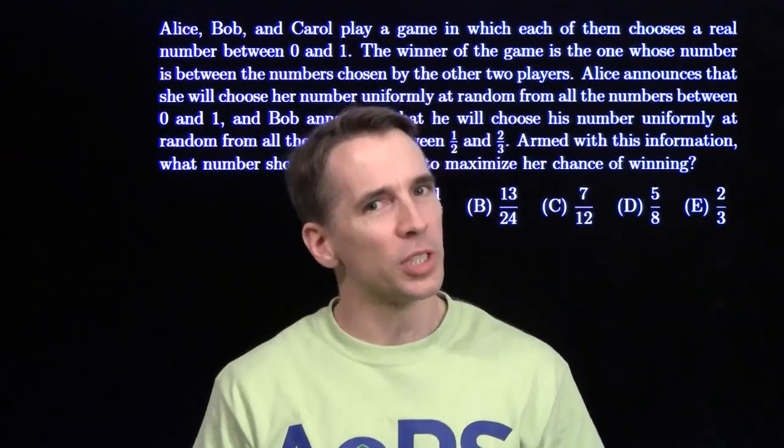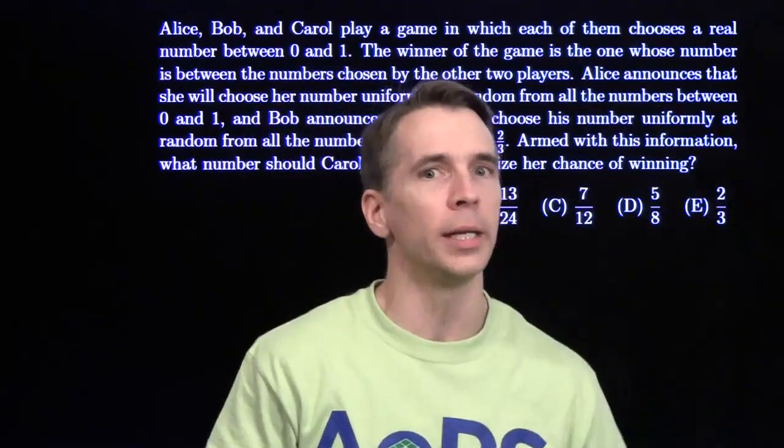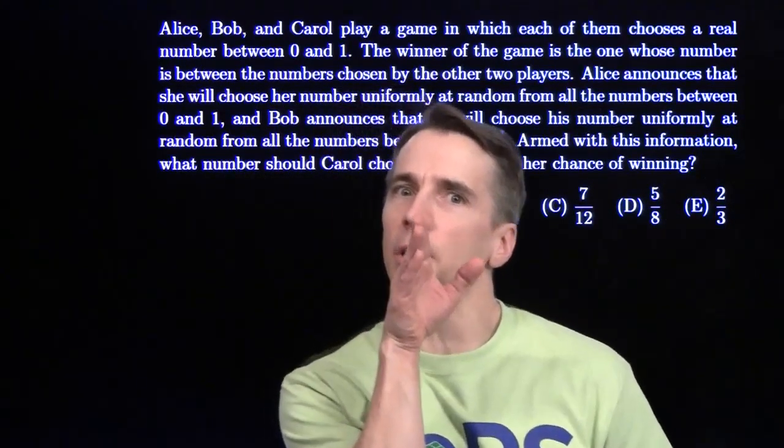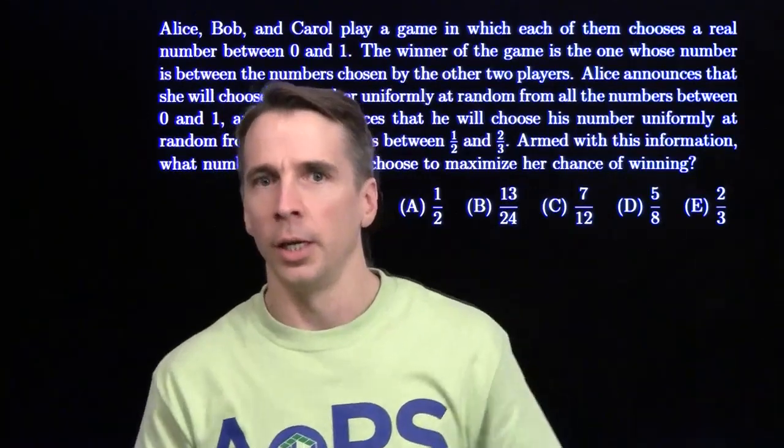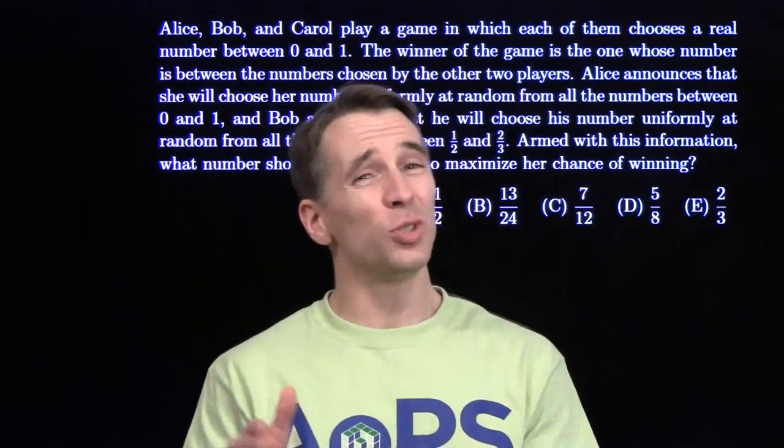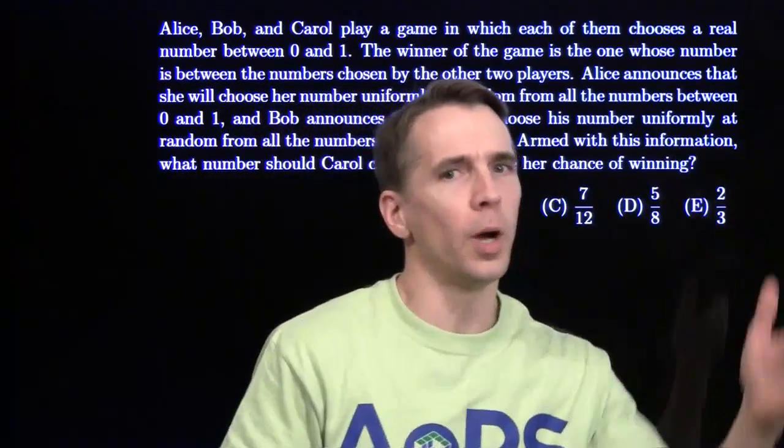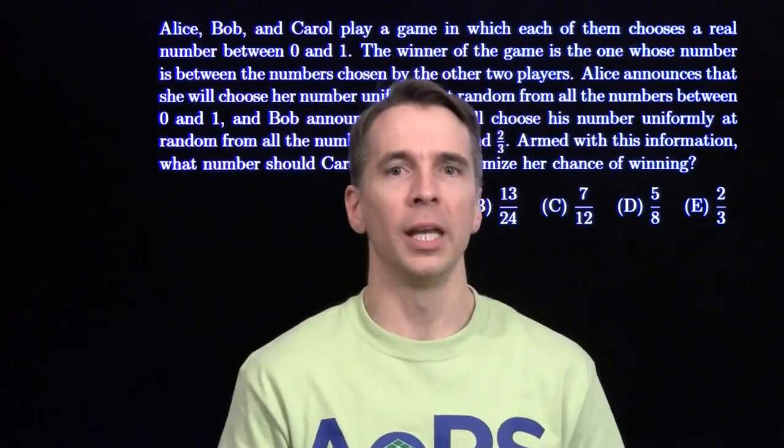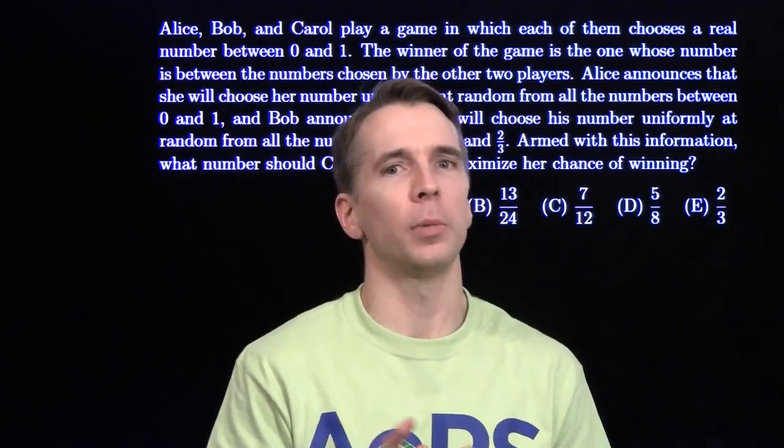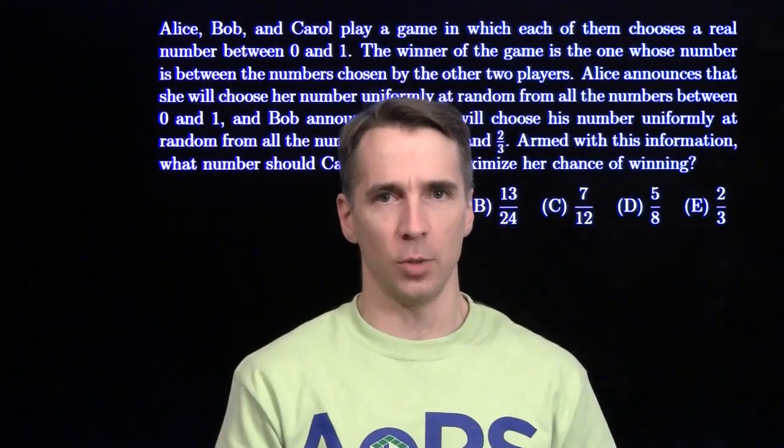Alice, Bob, and Carol are playing a game in which they each choose numbers from 0 to 1, and the winner is the player who chooses the number in the middle between the choices of the other two players. Alice announces she will choose uniformly at random from 0 to 1, and Bob says he's going to choose uniformly at random from 1/2 to 2/3. We have to help Carol pick a number that maximizes the chance that she wins.